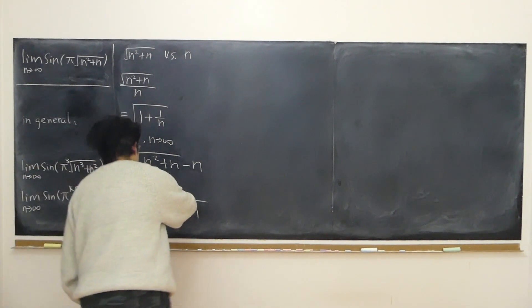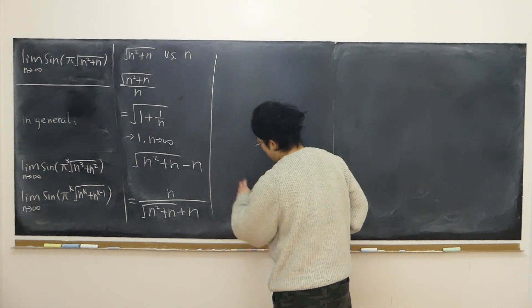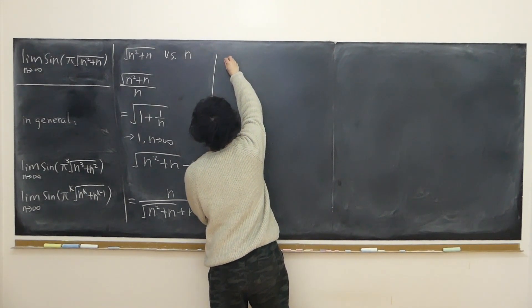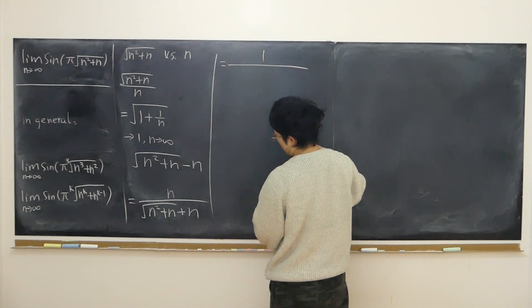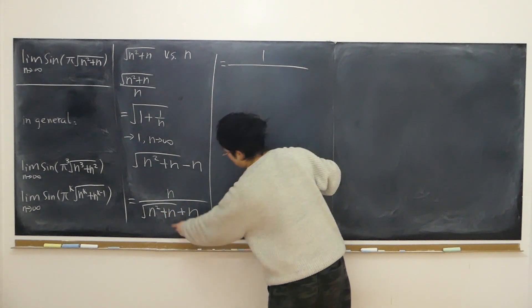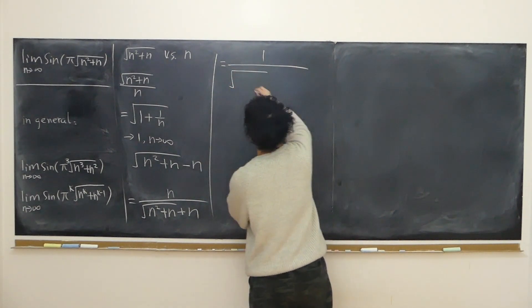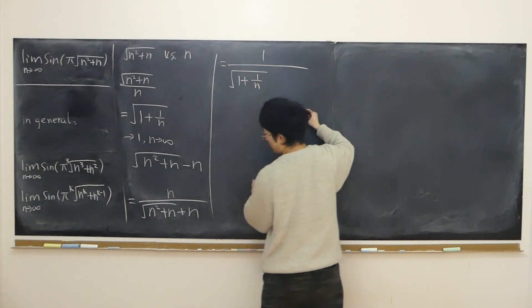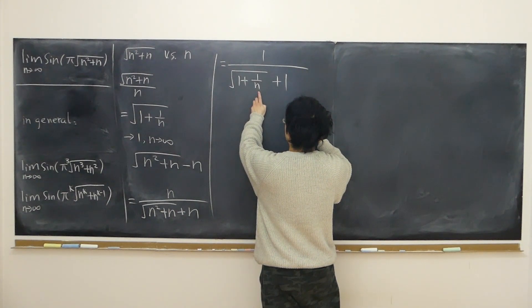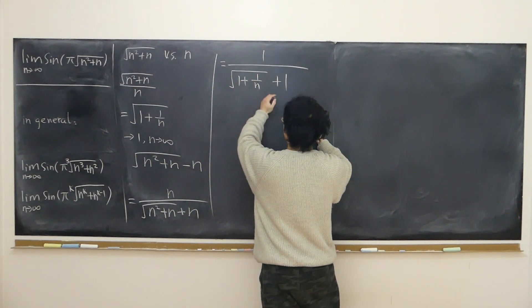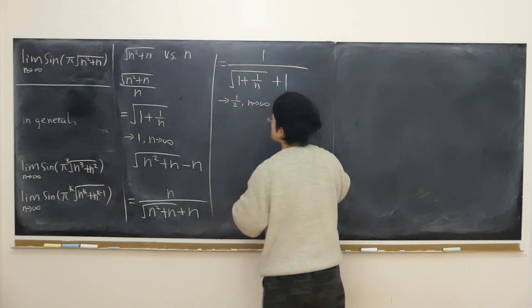So n squares are gone. We're only left with n on the top. Then we can divide by n to both top and bottom. On the top, I have just one. On the bottom, divide every term by n. We have square root inside of 1 plus 1/n plus 1. When n approaches infinity, this approaches 0, so 1 plus 1 equals 2. Half easily approaches half.